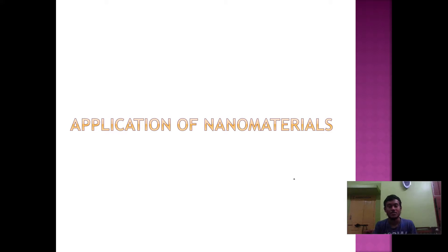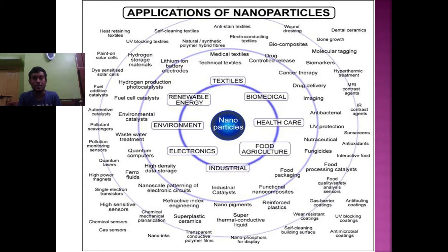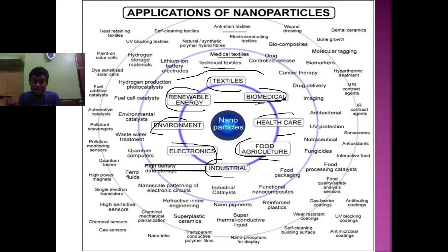Welcome back to the channel. In this video we'll talk about applications of nanomaterials. You can see the top main functions of nanoparticles are in textiles, renewable energy, environment, electronics, industrial, food, agriculture, healthcare, and biomedical. Under each of these there are many applications — for example, under textiles you have medical textiles, technical textiles, anti-stain textiles, and many other textile industries.